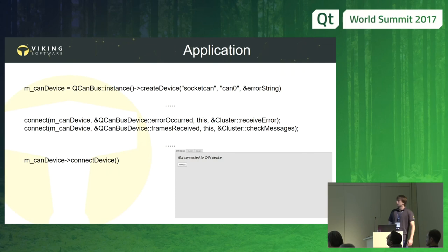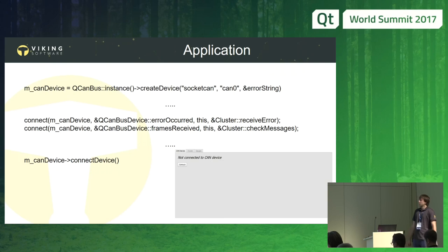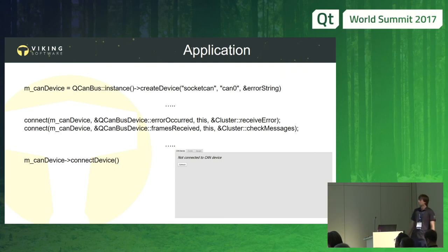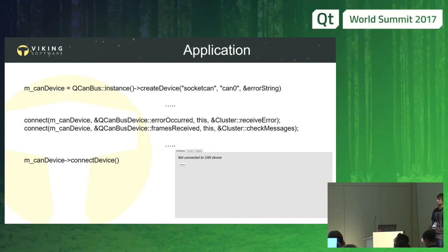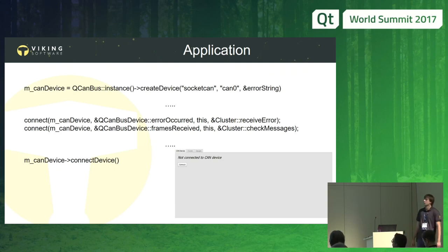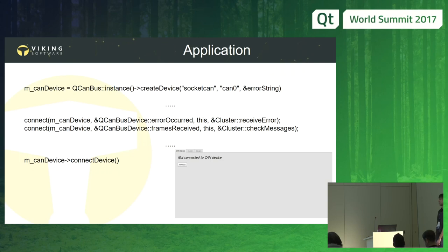Now let's move to our application. It's very simple — a few buttons and gauges, written using QML with C++. QML was chosen because it has nice gauge components. To create a device, we can use the QCanBus singleton, pass SocketCAN as the plugin and the name of the CAN device — which is can0 in our case. If we have several devices, we can enumerate them using the availableDevices function, also from the QCanBus class.